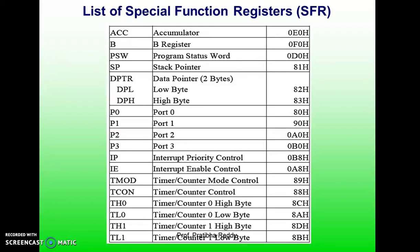The accumulator is an important general purpose register used to store data and perform operations. The B register is also 8 bits, as is the program status register. The data pointer DPTR is 16 bits, divided into DPL and DPH — lower and higher bytes of the data pointer. All four ports of the 8051 are 8-bit bi-directional input/output ports. Related to interrupts, there are two 8-bit registers: interrupt priority and interrupt enable, which will be discussed further.